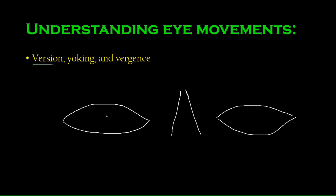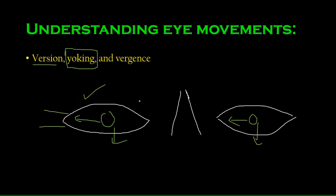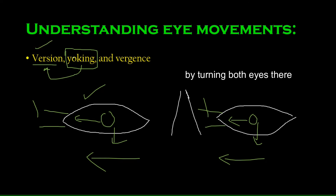Then there is version — when one eye looks in a direction, the other looks in the same direction as well. This is possible because of a phenomenon called the yoking of muscles. Yoking means pairing up muscles. For example, the lateral rectus of one eye and the medial rectus of the other eye are yoke muscles — by their combined action, both eyes look in one single direction, which is called version.